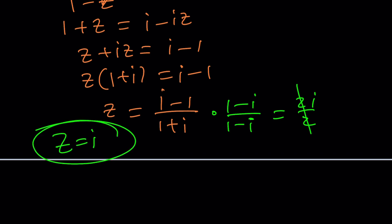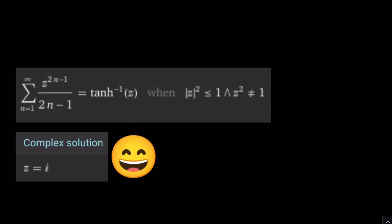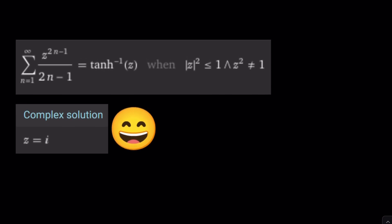Case closed. But let's look at Wolfram Alpha. Do you think Wolfram Alpha can solve this problem? If you prompt it correctly maybe. Yes. Complex solution is z equals i.